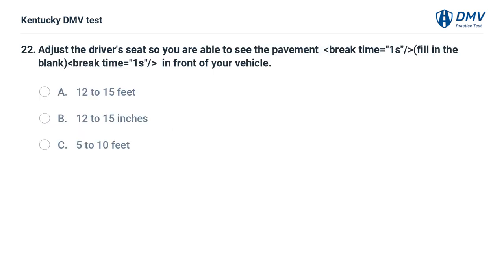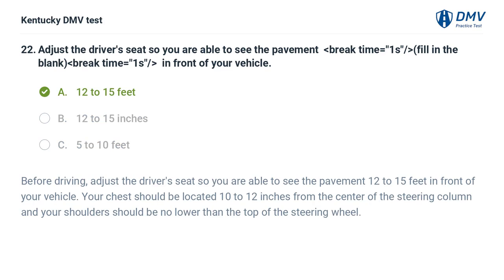Fill in the blank: Adjust the driver's seat so you are able to see the pavement __ in front of your vehicle. A. 12 to 15 feet. B. 12 to 15 inches. Before driving, adjust the driver's seat so you are able to see the pavement 12 to 15 feet in front of your vehicle. Your chest should be located 10 to 12 inches from the center of the steering column, and your shoulders should be no lower than the top of the steering wheel.